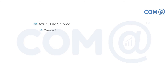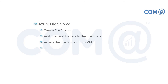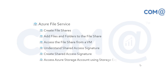We'll also discuss Azure file services — how to create a file share, add files and folders to file shares, and access file shares from virtual machines. We'll understand what is a Shared Access Signature (SAS), how to create one, and how to use it to access a storage account. We'll also cover how to access the Azure storage account using Storage Explorer.